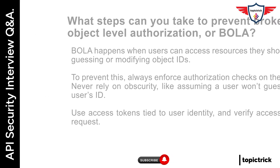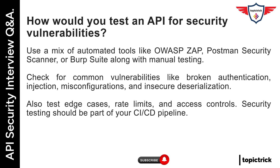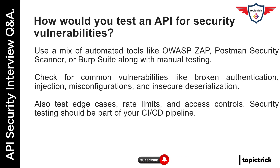How would you test an API for security vulnerabilities? Use a mix of automated tools like OWASP ZAP, Postman Security Scanner, or Burp Suite, along with manual testing. Check for common vulnerabilities like broken authentication, injection, misconfigurations, and insecure deserialization. Also test edge cases, rate limits, and access controls. Security testing should be part of your CI/CD pipeline.